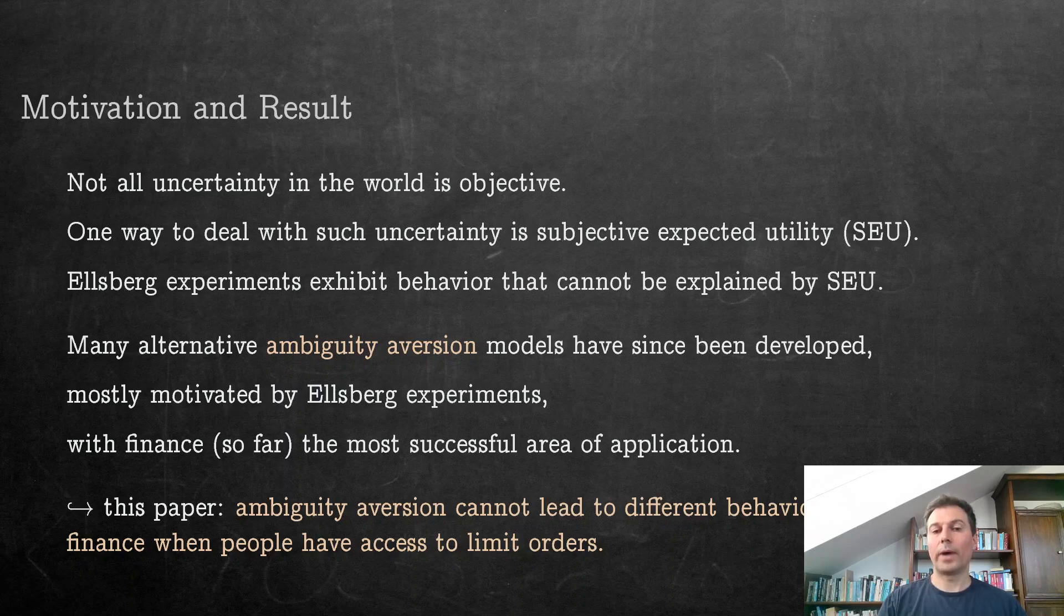When you have limit orders and access is all that you need, ambiguity aversion and SEU is the same. So that means two things: Some of the results on limit orders would not be true, and some of the results that require ambiguity aversion so far can probably also be done with just subjective expected utility after all.